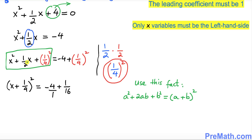If you are wondering how we arrived at a complete square, we use this well-known fact: a squared plus 2 times a times b plus b squared is always equal to the complete square of (a plus b) to the power of 2.